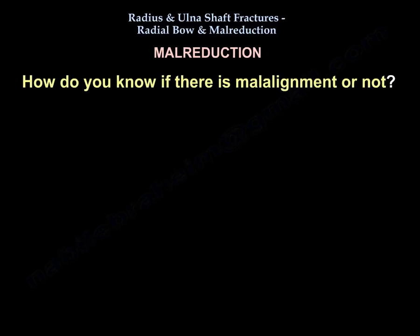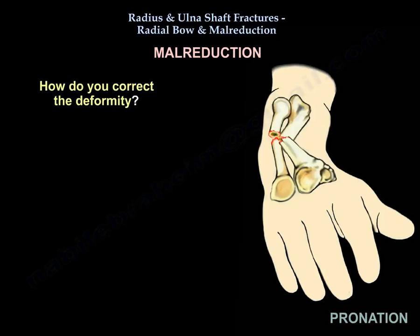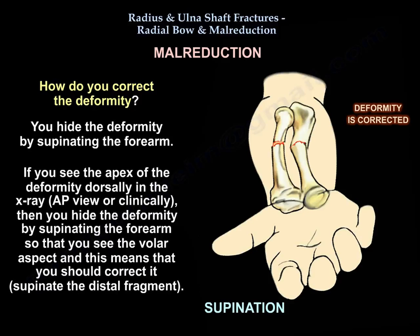To identify malalignment, note that the deformity may indicate rotation. An extensor bow or dorsal deformity indicates a pronational deformity. To correct this, you hide the deformity by supinating the forearm — if you see the apex of the deformity dorsally on X-ray or clinically, supinate the forearm to see the volar aspect. This means you correct it by supinating the distal fragment.